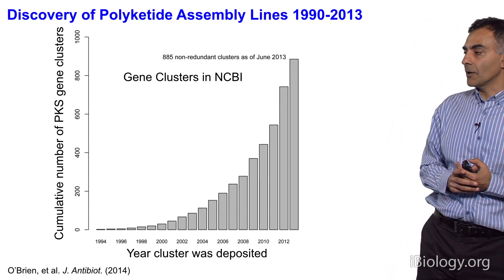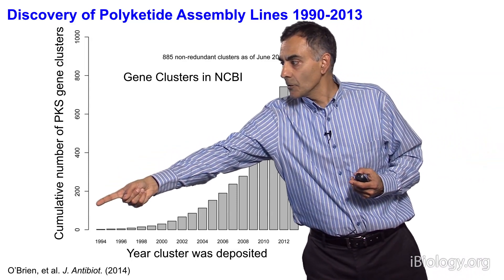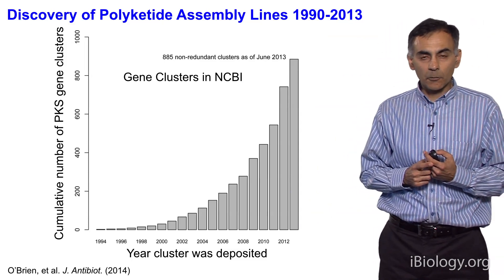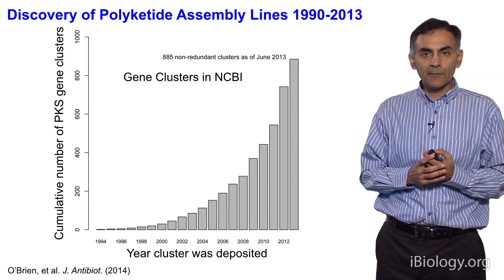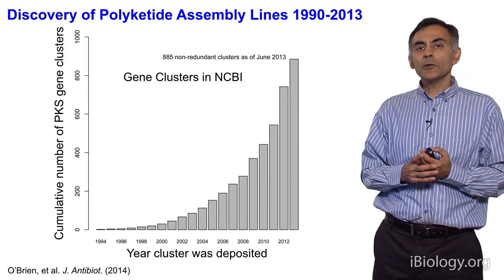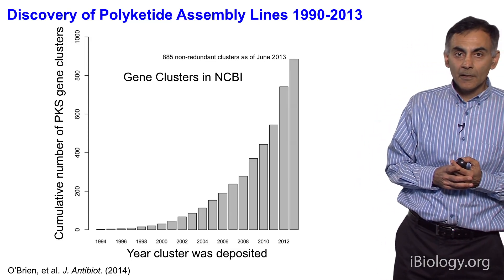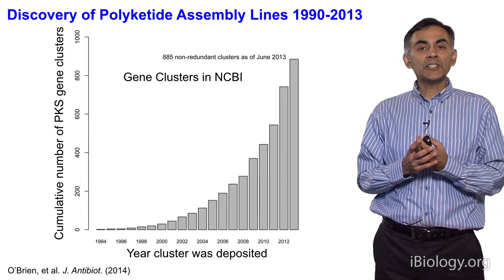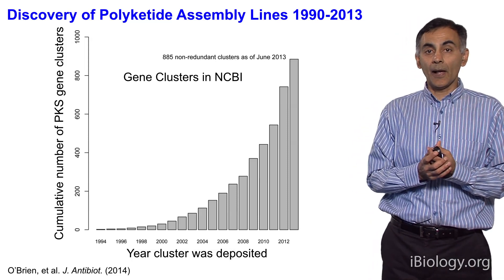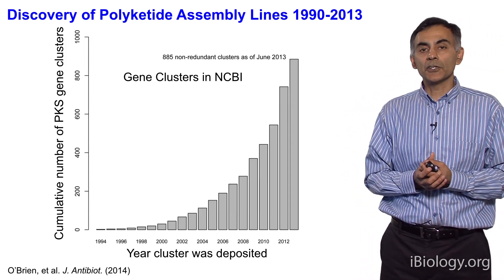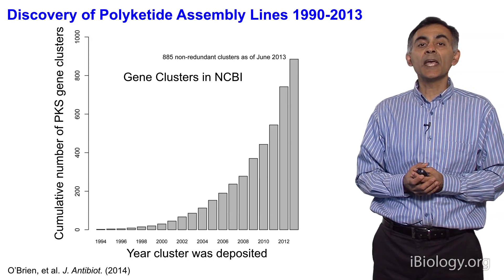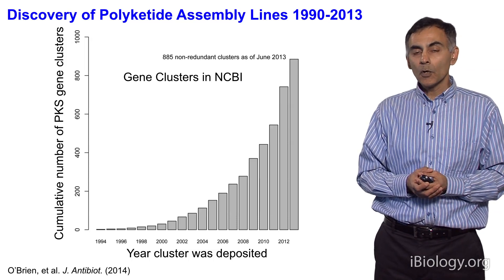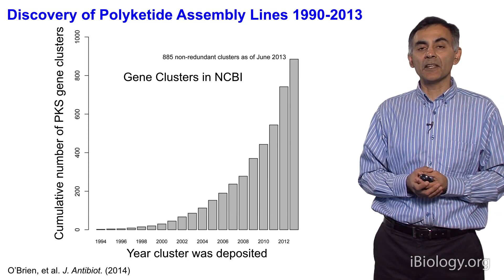Let's start with the biology. Back when we started working on this assembly line — which was way out here, perhaps even before then — there was only one assembly line that was known: DEBS. You either worked on DEBS or you did something else. As you can see in this graph, the world has changed significantly over the past 20 years. There were maybe a few tens of these assembly lines that had been painstakingly cloned and sequenced over the first 10 to 15 years shown on this slide.